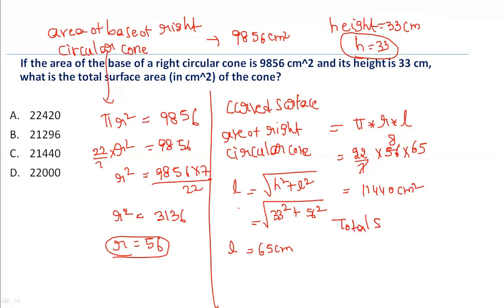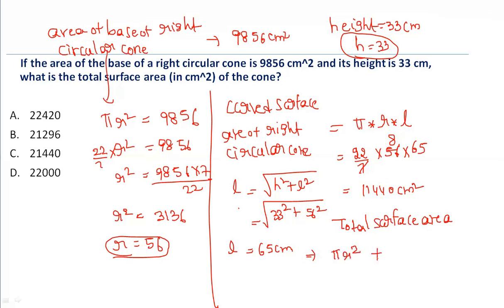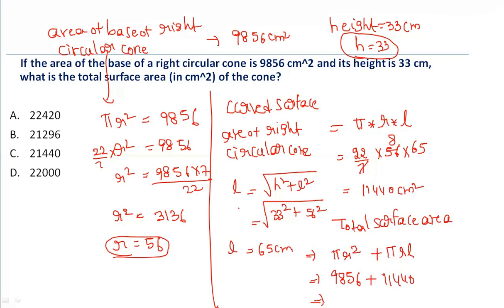Total surface area = base area (πr²) + curved surface area (πrl). The base area given is 9856 and the curved surface area (πrl) is 11,440. Adding these together, the total surface area is 21,296 cm².